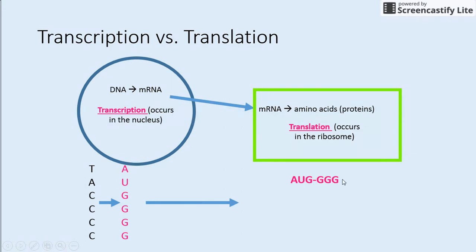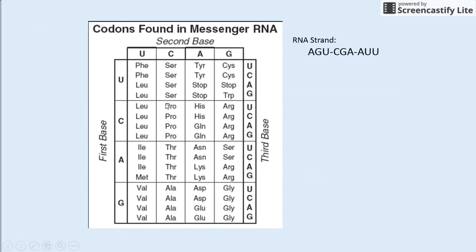This is how we code for our amino acids. You have this codon chart in your notes. We first have to break our RNA into codons, groups of three.